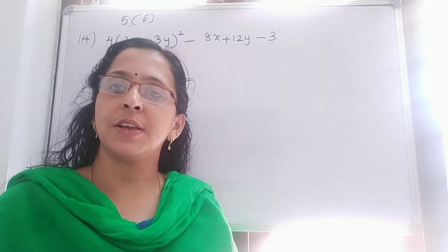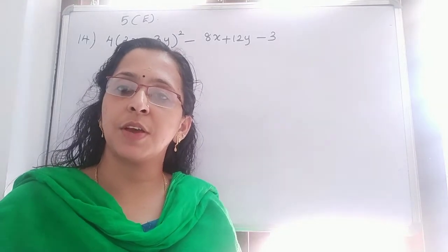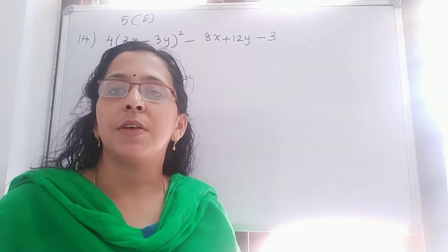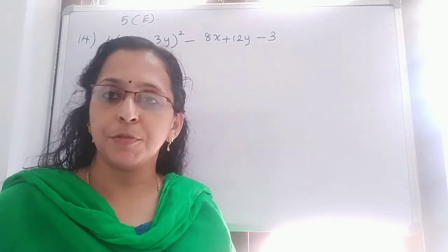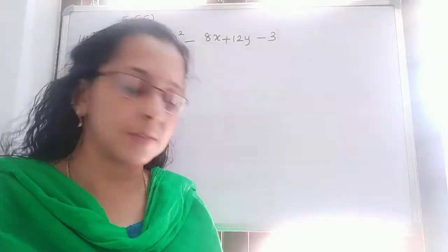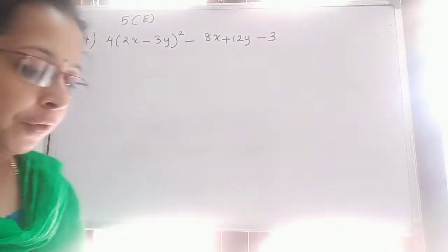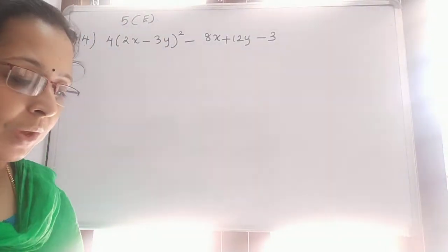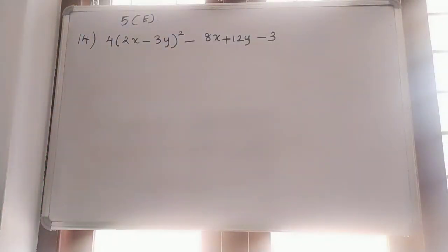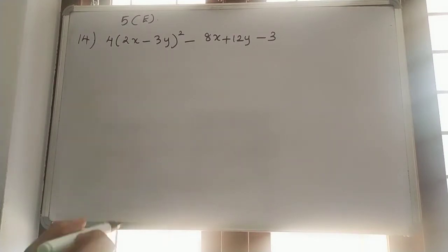Hi everyone, we can continue exercise 5E. We can start question number 14 onwards. The 14th one: 4 into (2x minus 3y) whole square minus 8x plus 12y minus 3.